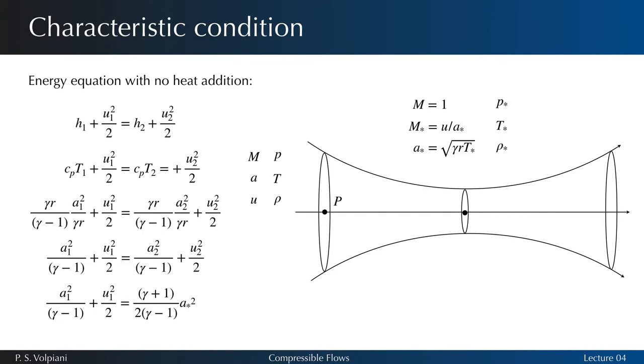On the other hand, if the general flow is adiabatic throughout, then a star is a constant value at every point in the flow.